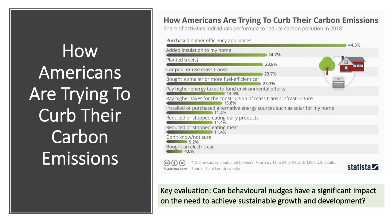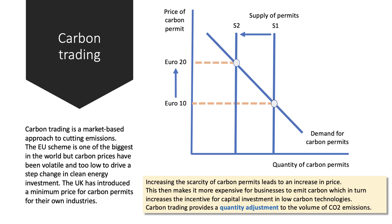It's not just about carbon taxes or carbon trading — it's also about trying to change behavior. An interesting graphic from a survey shows how Americans are trying to cut their carbon emissions: buying fuel-efficient appliances, planting trees, car sharing, stopping eating dairy products, and buying electric cars. A key evaluation point is how significant behavioral nudges could be in changing the behavior of both producers and consumers — this is a moot point but one you can definitely include.